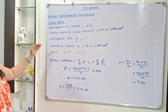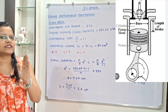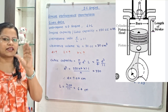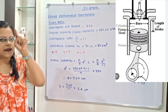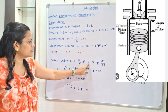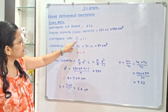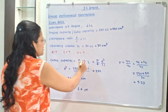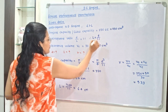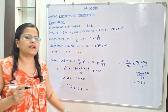Engine capacity or cubic capacity is given. The formula for engine capacity is bore area, that is pi by 4 D-squared, multiplied by stroke length L. Since the over-square ratio D by L equals 1.1, we can write L equal to D divided by 1.1, and substitute this into the equation to get pi by 4 D-cubed divided by 1.1.